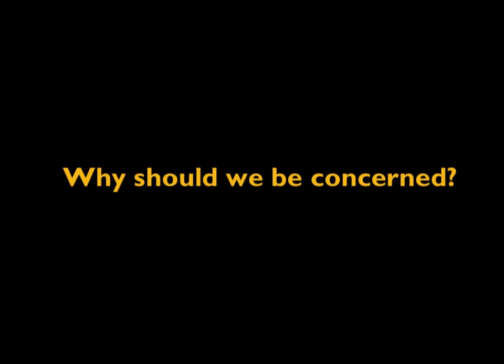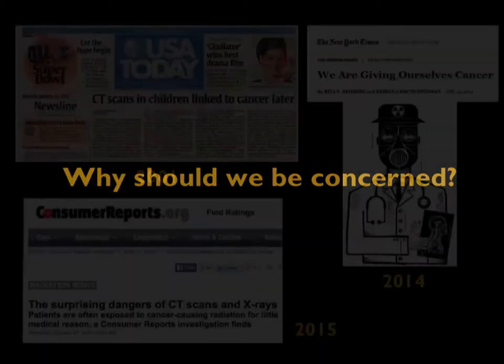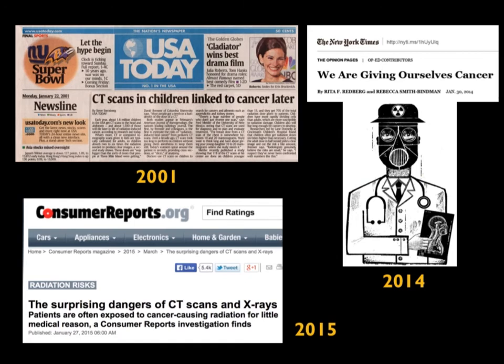The first question is: why should we be concerned? There are a number of media articles which raise concerns about CT imaging. One article back in 2001 changed the whole field, because at that time CT imaging in pediatrics was done almost the same as for adults, with not much attention paid to protocol settings. That article took everybody by surprise, and from then onwards we saw a dramatic change—separate protocol settings for pediatric imaging versus adults, which is justifiably appropriate.